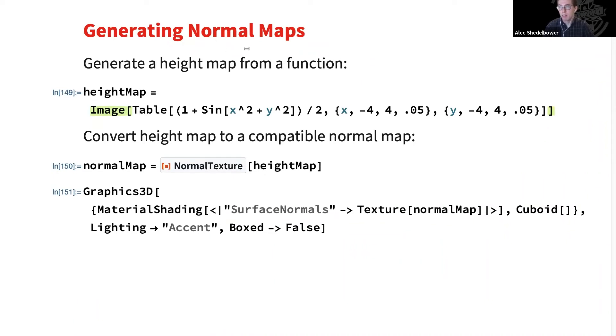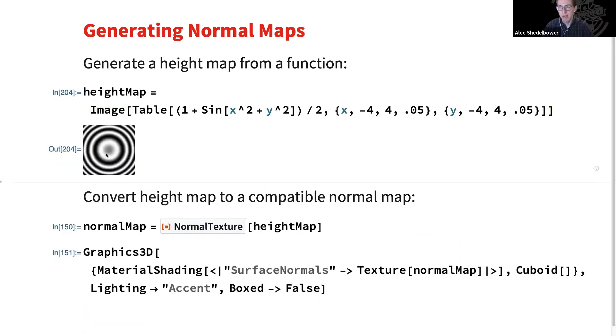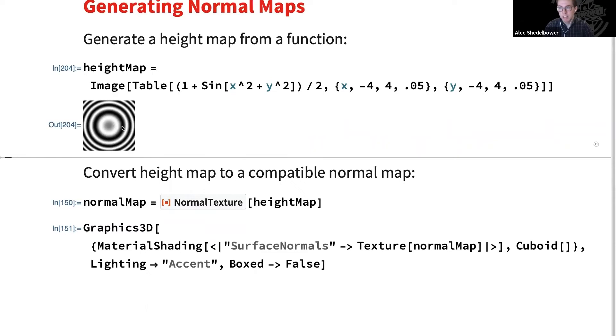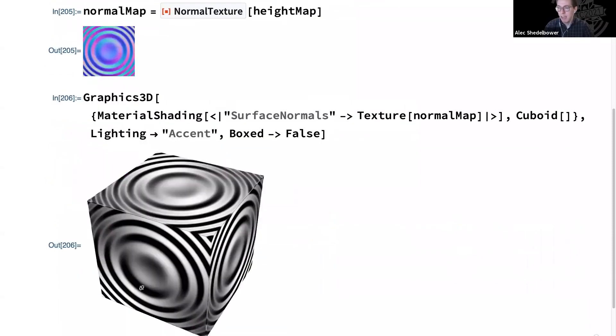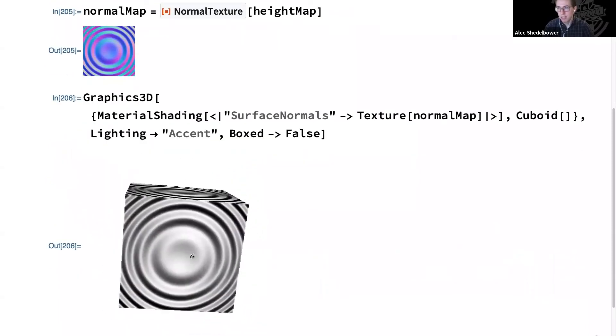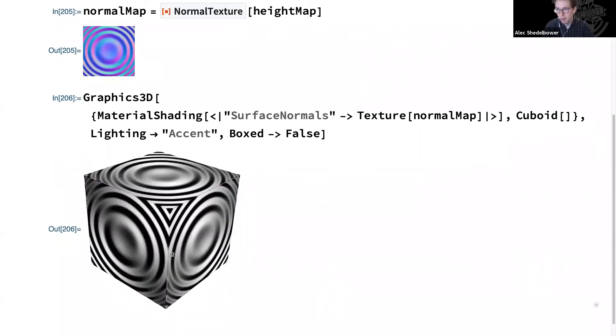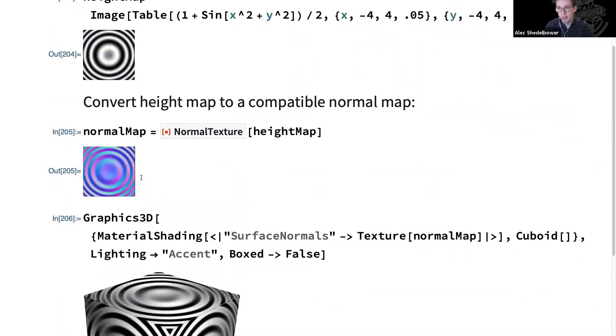And then as far as getting these, you can often find them freely available online. But we also want you to have a way to generate your own. So here you can generate any kind of height data you want. Here it's shown by a grayscale image from a sine function. And then we have this nice function in the Wolfram Function Repository called NormalTexture that takes on this height data and spits out a normal map. Go ahead and just directly use that normal map in our MaterialShading here. And now we have this wavy surface of our cube. And if anyone's wondering, this is following the kind of standard OpenGL convention for normal maps. We're also able to produce the DirectX convention as well.